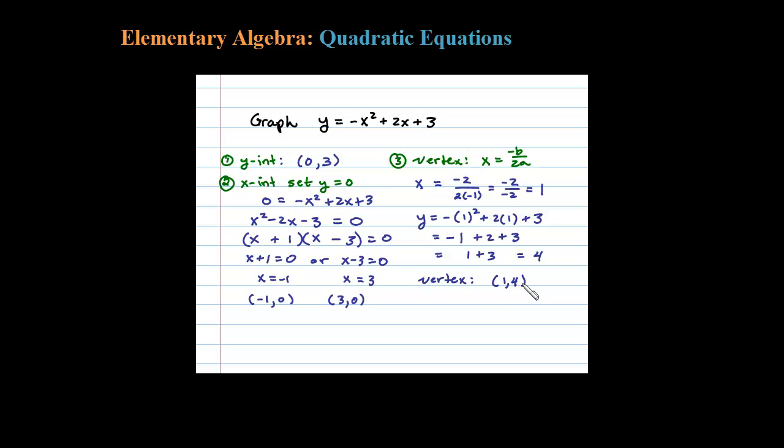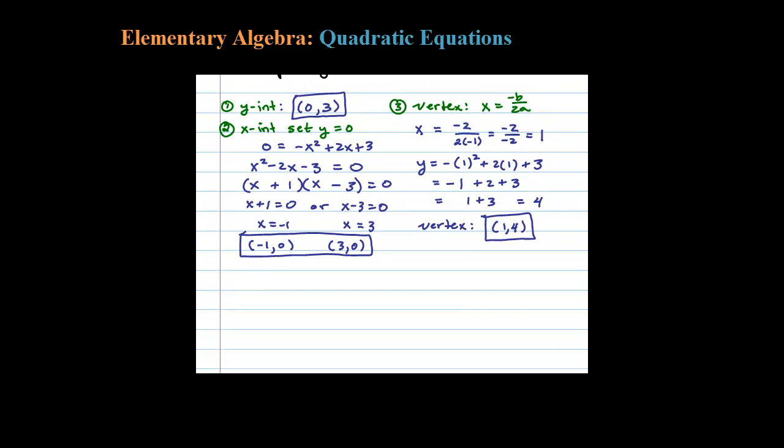So the vertex is at (1, 4). Once you have the y-intercept, the two x-intercepts, and the vertex, you're ready to start graphing. Let me draw a blank Cartesian coordinate system.